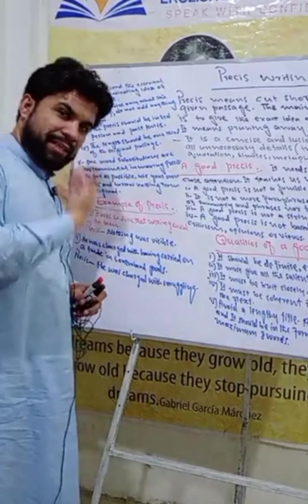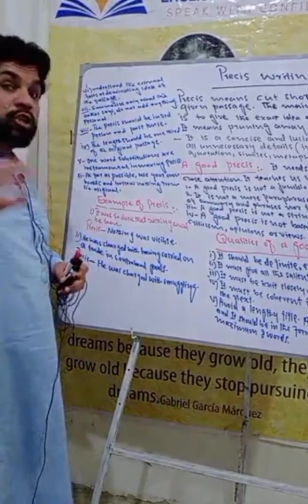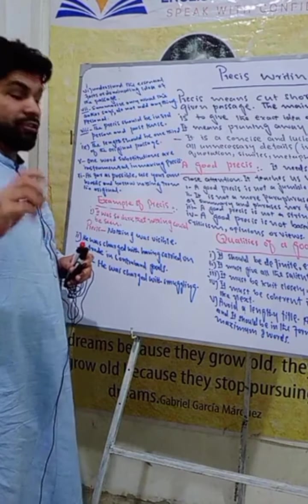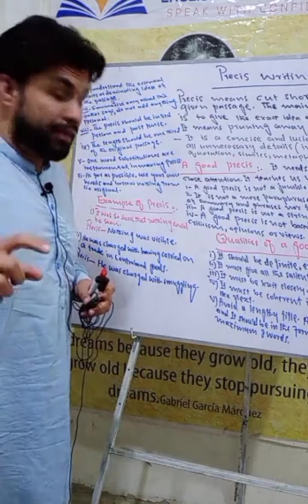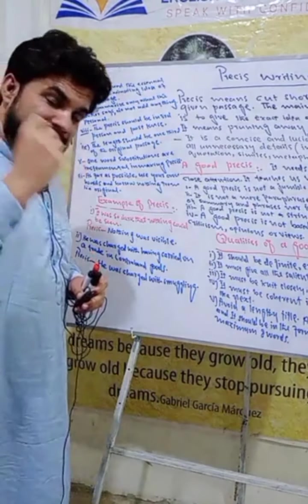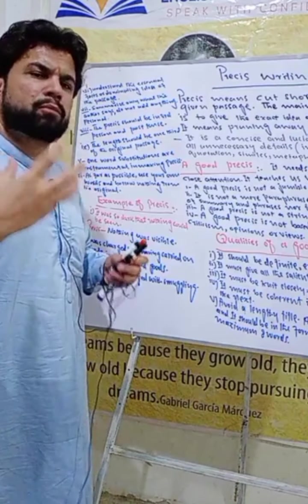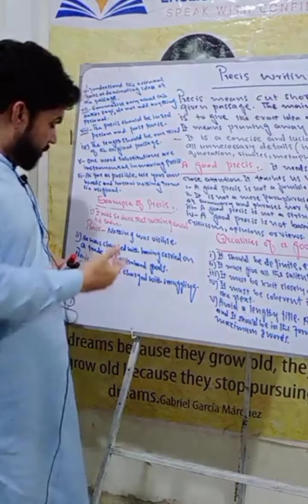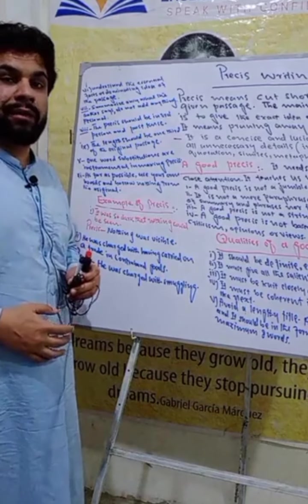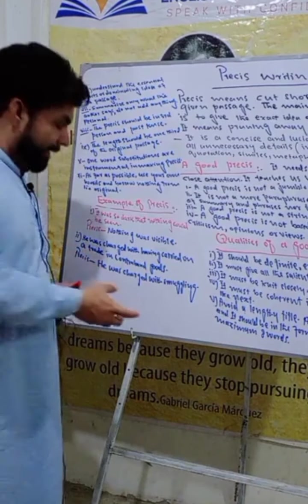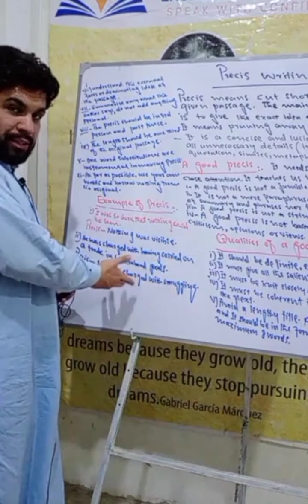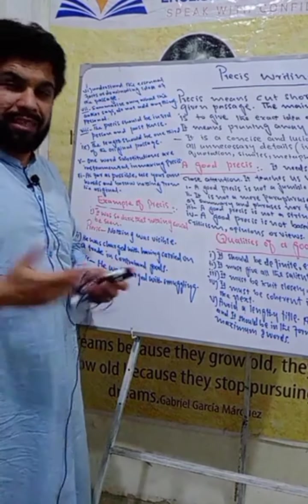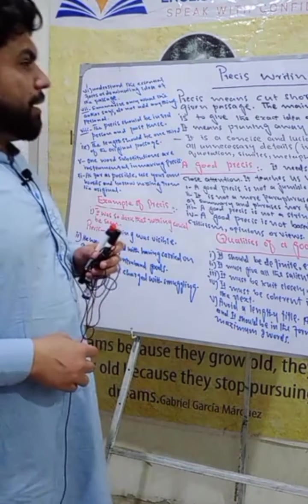Another example sentence: 'He was charged with having carried on a trade in contraband goods.' The precis of this is: 'He was charged with smuggling.' The full sentence is reduced to just five words. This is what precis writing is.